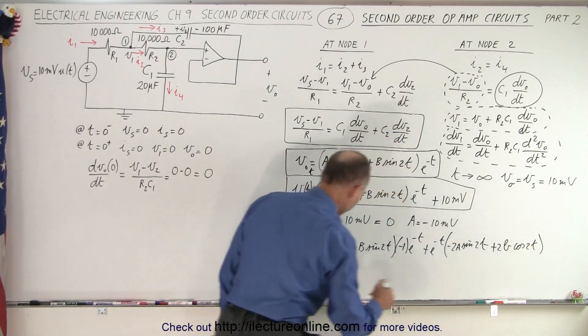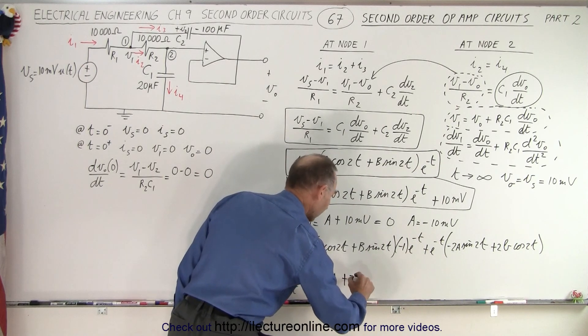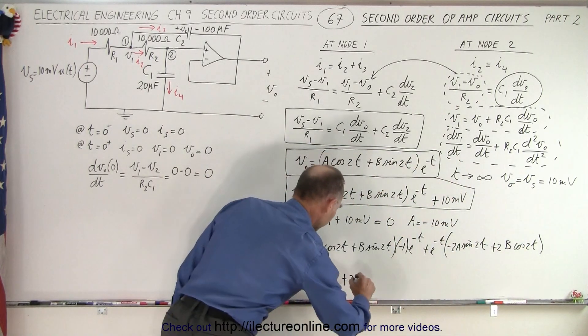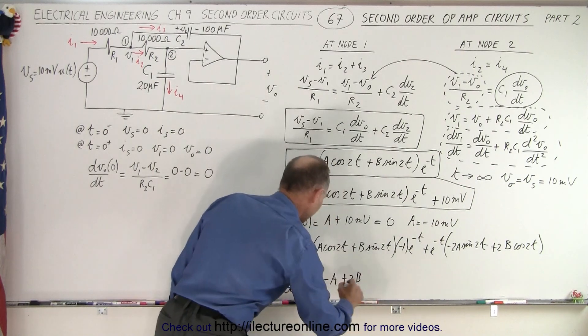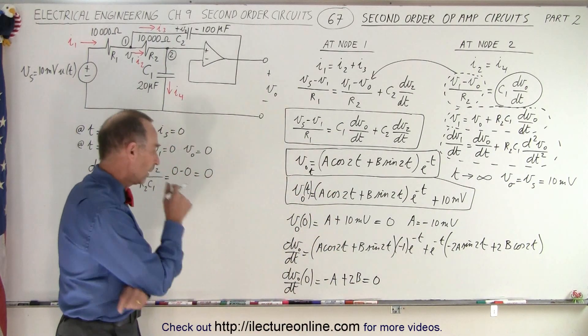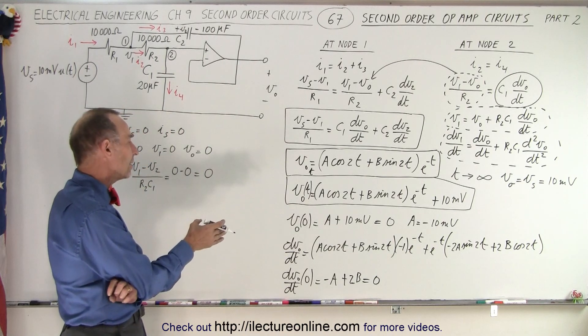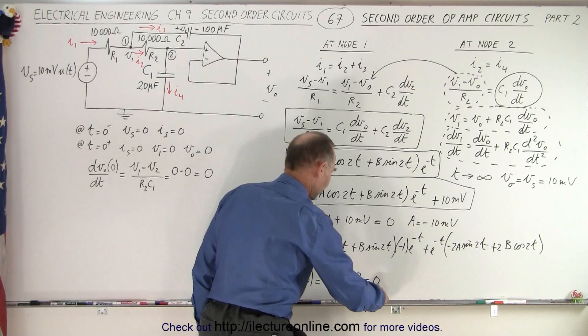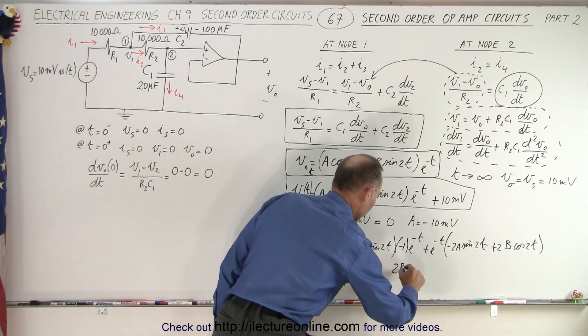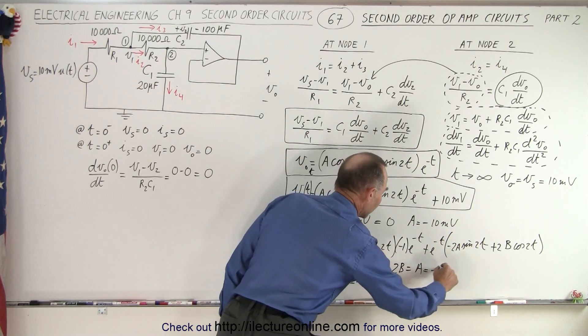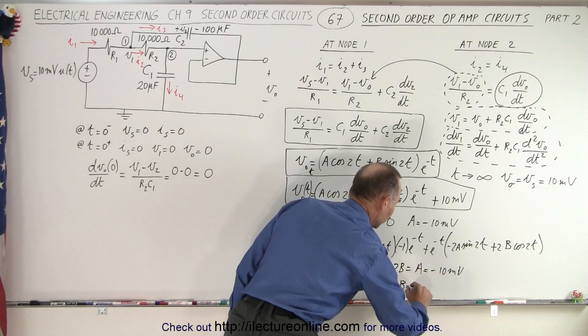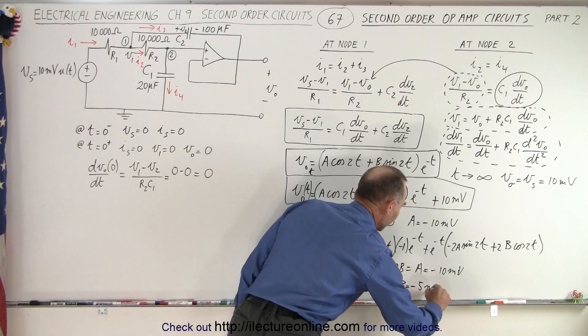And that equals 0, because that came from here. We know that A is minus 10, and so when we bring that across, we have 2B is equal to A, which is equal to minus 10 millivolts. That means that B is equal to minus 5 millivolts.